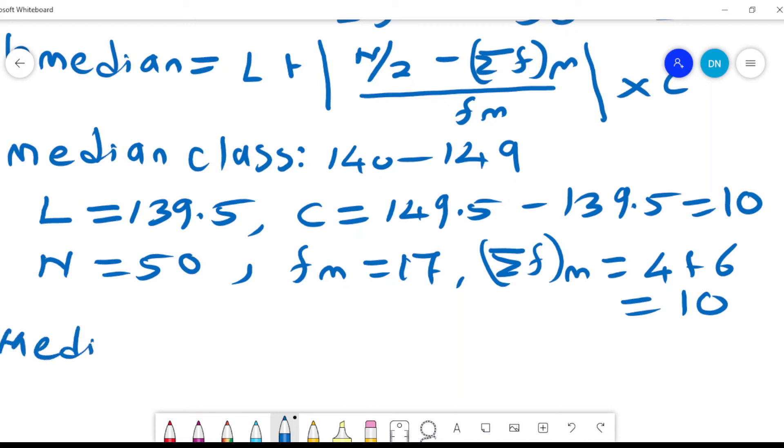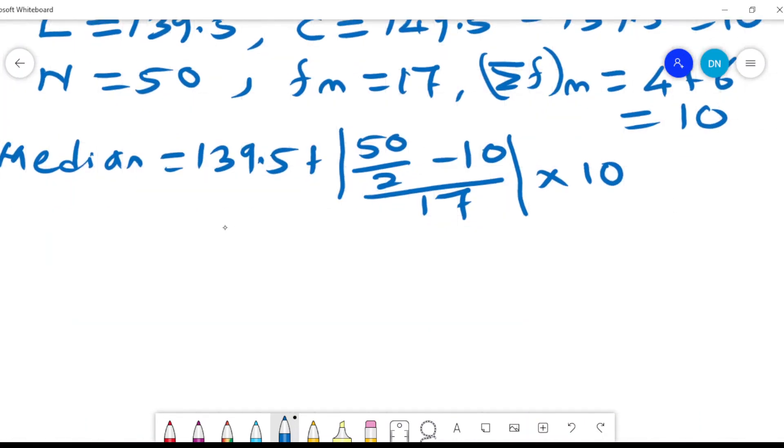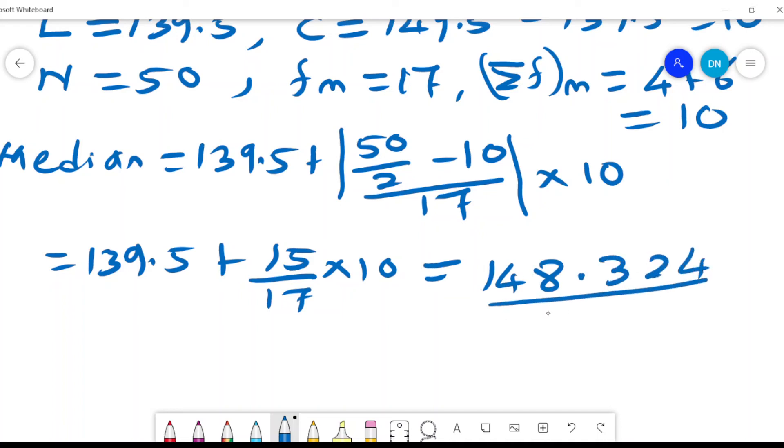So with all those values, then I can get the median, which will be 139.5 plus 50 divided by 2 minus 10 over 17, then times 10 again. So those are the values that we have. And if we do the computations based on those values, we'll get 139.5 plus 50 divided by 2 is 25. 25 minus 10 is 15. So it is 15 over 17 times 10. And that will give us approximately 148.3. And that is the cholesterol level, the median cholesterol level that we have.